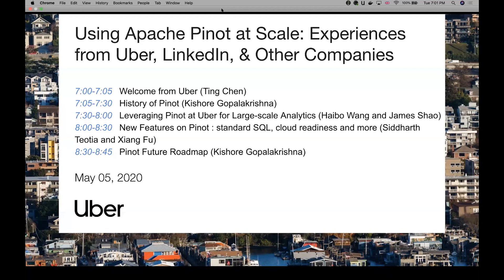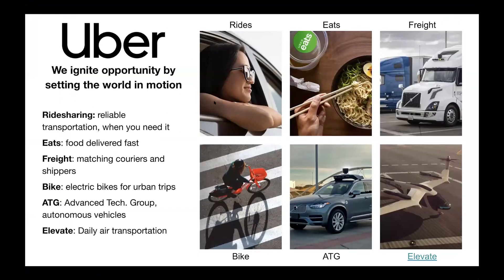First of all, we're going to have Kisho. Kisho is one of the main architects of Apache Pinot. He is going to tell us a lot about the history of Pinot from his design all the way to the present day. Next up, we're going to have Haibo and Jane from UBA to talk about how they added great and cool features to Pinot and its surrounding ecosystem here at UBA. As you may already know, UBA is an early adopter of Apache Pinot, and right now Pinot has been able to support many important UBA products like UBA Eats, rides, freight, and so on.